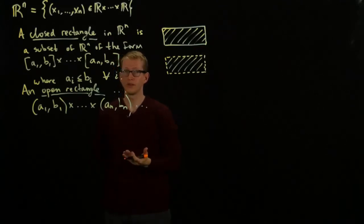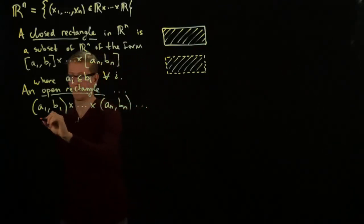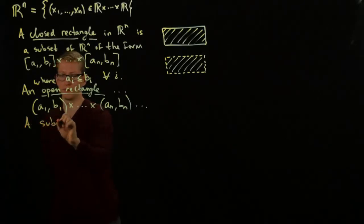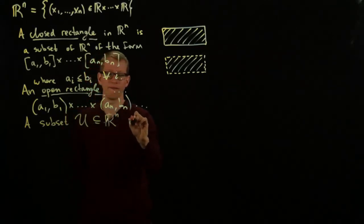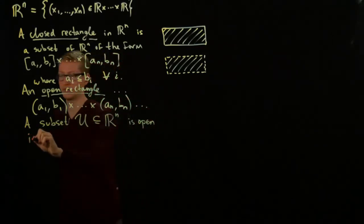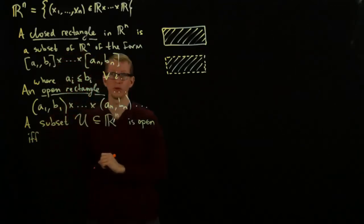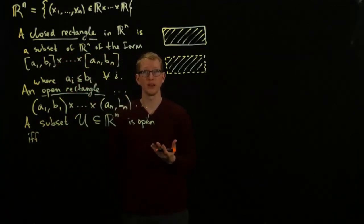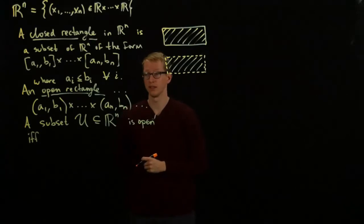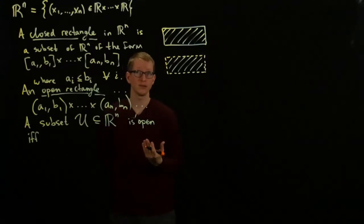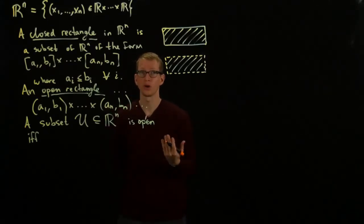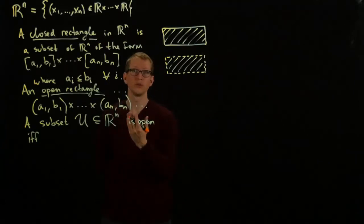And with these definitions, we can make sense of what it means to be an open set. So a subset U in R^n is open if and only if, well, if we recall what it meant for a subset of the ordinary real numbers to be open, is for any point in that set, we can find some open neighborhood containing that point and also contained in that set. And that's exactly what we have here. But what are our open neighborhoods? In this case, we're going to be using rectangles.